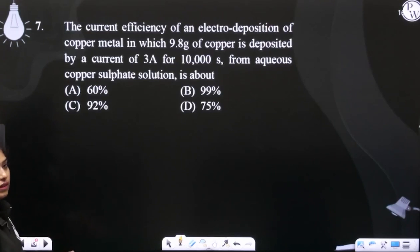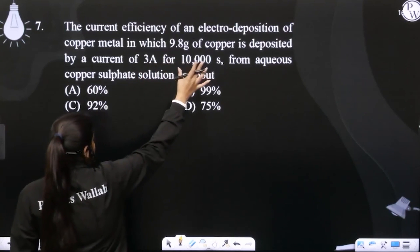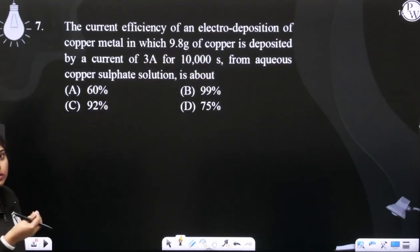So, what do we do? Either you have a formula you can use it directly. Then, what do we do? We can calculate how much copper would be deposited if you give this amount of current and this amount of time, then how much copper would be deposited?